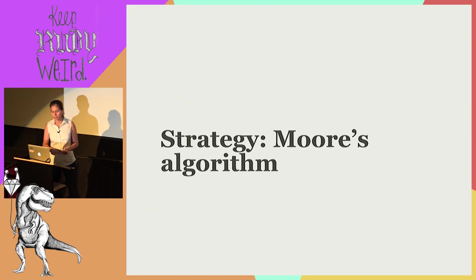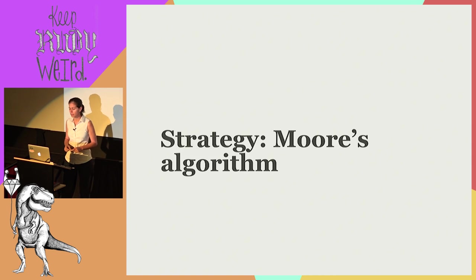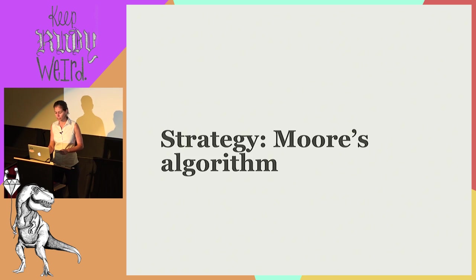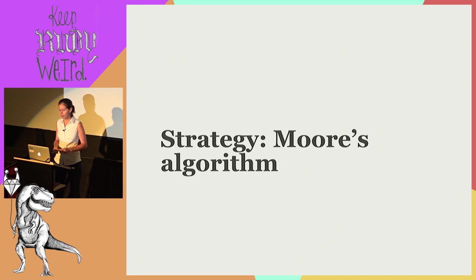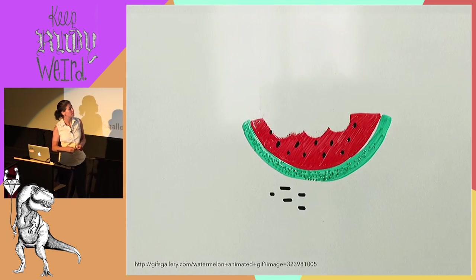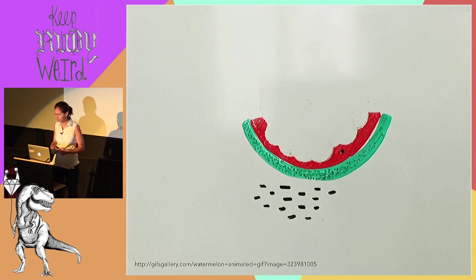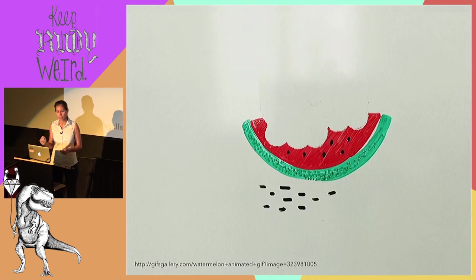Another strategy is Moore's algorithm. Here we want to minimize the number of spoiled foods in our fridge. The algorithm says: schedule produce in order of spoilage date, earliest first, one item at a time. But the moment it looks like we're not going to get to eat the next item on the list, we pause and reconsider. We review what's left and throw out the biggest item — the one that will take us longest to eat — then continue with what remains. It might mean forgoing a watermelon or large item to get through everything else more easily.